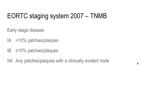The 2007 consensus paper staging system separates cases into two broad categories: early stage and late stage. Early stage comprises 1A, 1B, and 2A. Stage 1A covers patches and plaques involving less than 10 percent of body surface area; stage 1B involves patches and plaques covering greater than 10 percent of body surface area; and stage 2A is defined as any patches and plaques with a clinically evident lymph node.